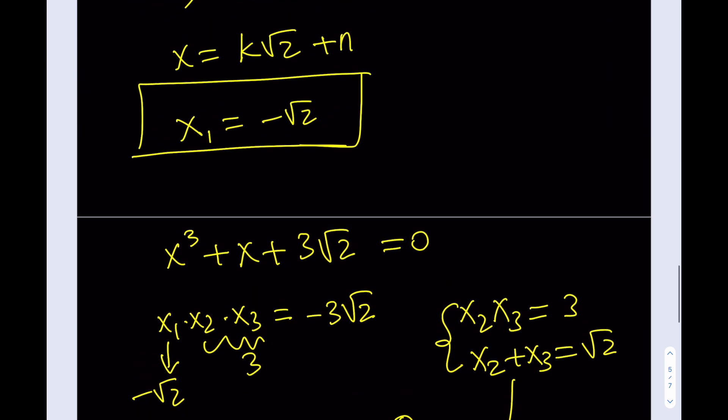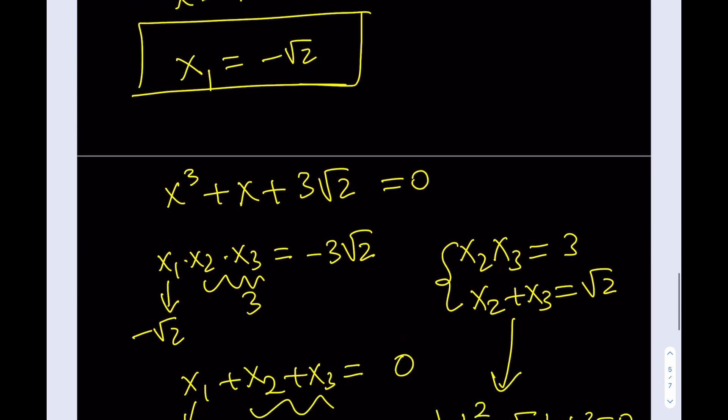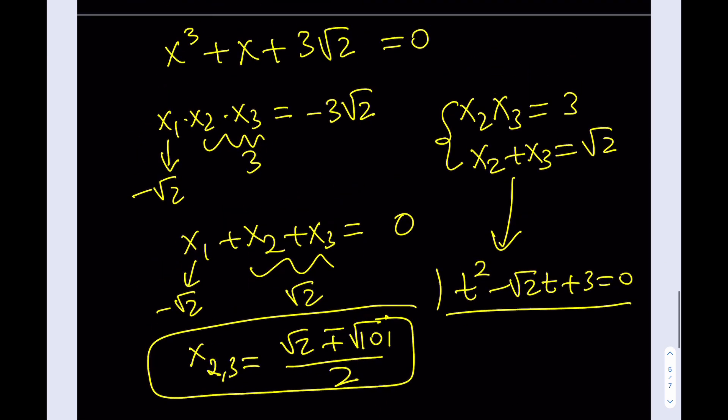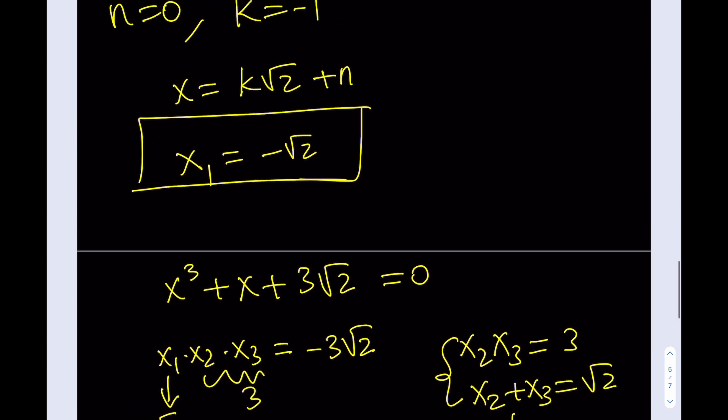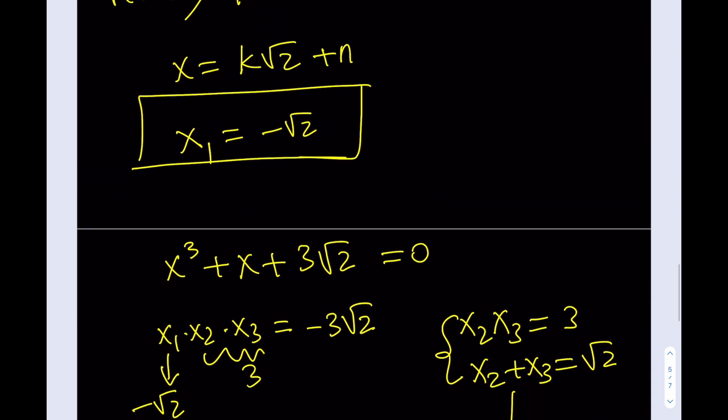So x2 and x3 are root 2 plus or minus root 10 i, divided by 2. Those are all the solutions — x1 is negative root 2, and x2 and x3 are the complex conjugate pair. That's it for this video. Thank you for watching, I hope you enjoyed it. Don't forget to comment, like, and subscribe, and I'll see you in the next video. Until then, be safe. Take care. Bye-bye.